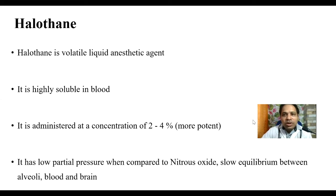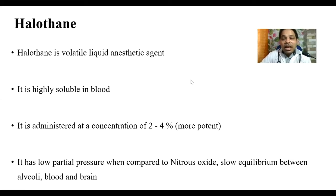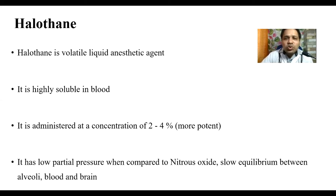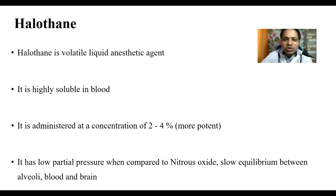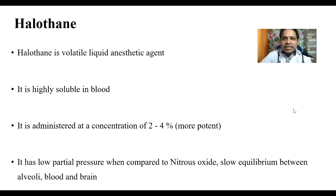Moving on to another anesthetic agent — halothane. Halothane, on the contrary, is a volatile liquid anesthetic agent, highly soluble in blood, administered at a concentration of 2 to 4 percent. It is more potent than nitrous oxide and has low partial pressure compared to nitrous oxide, so equilibrium between the alveoli, blood, and brain is slow.